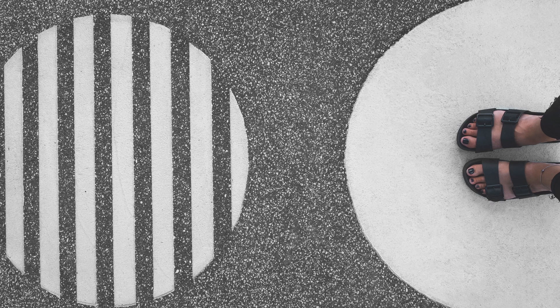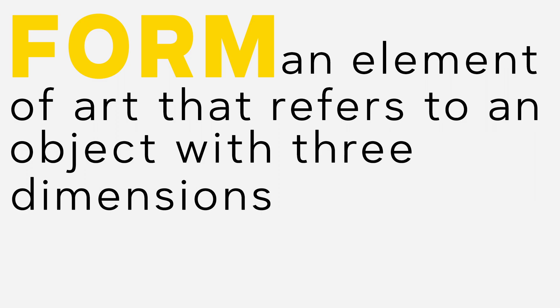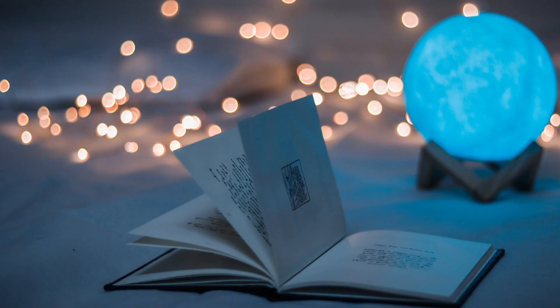Like shapes, forms have height and width. Unlike shapes, they also have a third dimension: depth. Form is an element of art that refers to an object with three dimensions. When you hold a book in your hand, you are experiencing its form in three dimensions — height, width, and depth. Forms are grouped as geometric or freeform, much as shapes are.